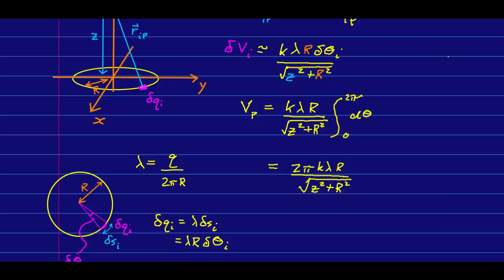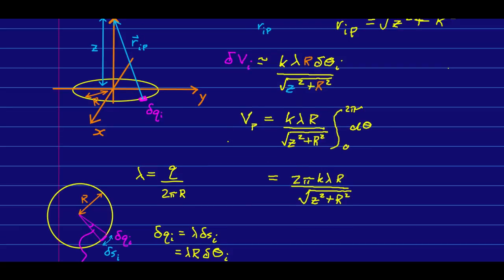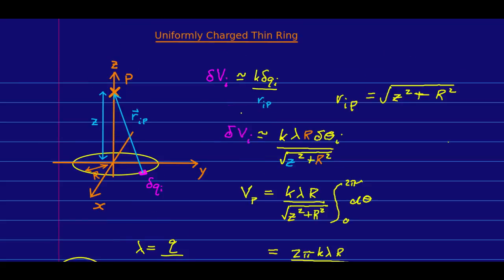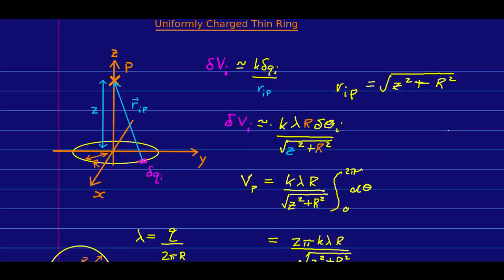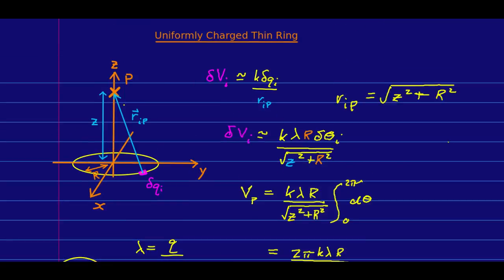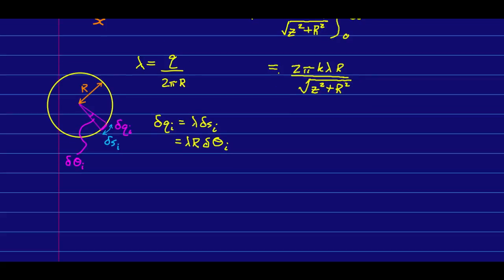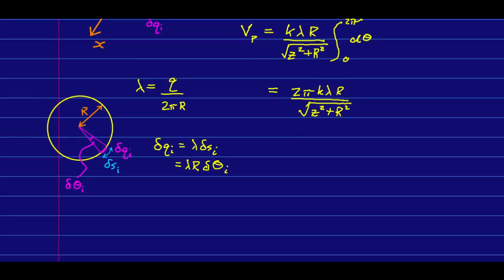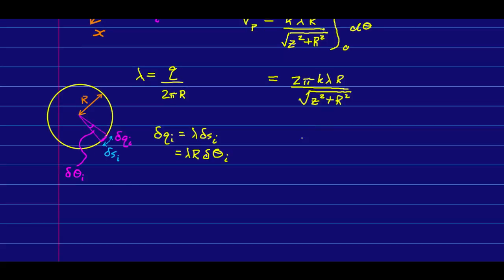Let's use what we just found, and we'll use it for the uniformly charged thin ring. So in lecture four, we found the potential as a function of Z along the Z axis. And that means we can use that to get the E field.